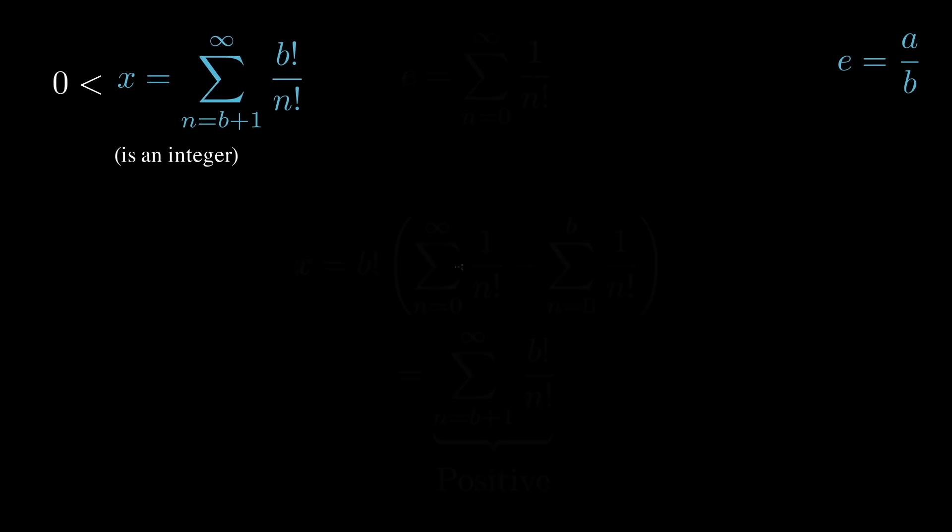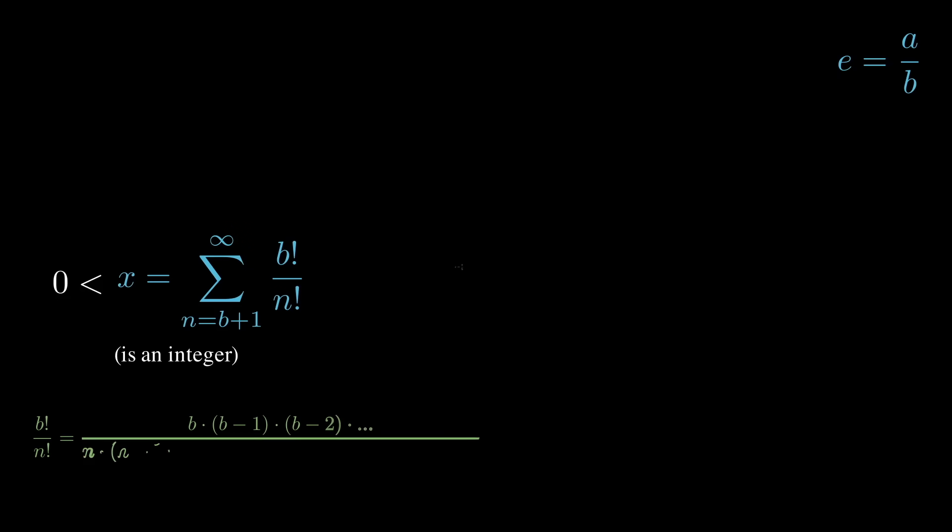Here comes the big reveal. If we write out this quantity using the definition of factorials, we will see some canceling going on since n inside our sum starts at b plus 1. In other words, n is greater than or equal to b plus 1. What that means is everything in the numerator cancels out, and we have this sort of truncated factorial of n down to b plus 1 in the denominator.